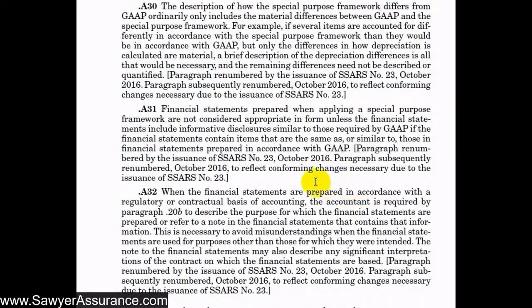Finally, at A32, when financial statements are prepared in accordance with the regulatory or contractual basis of accounting, we are required to include in our compilation report a reference to the note where that special purpose framework is described. This way, users of the financial statements will see that reference in the compilation report and can go to the note to ensure there are no misunderstandings about the purpose of the financial statements.